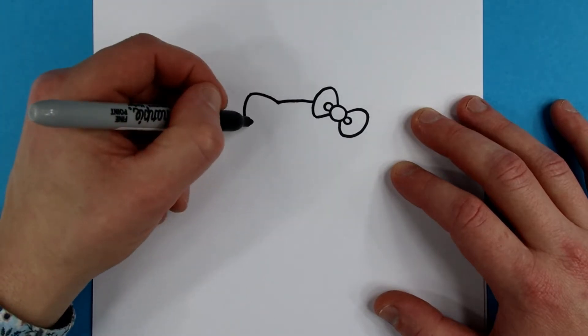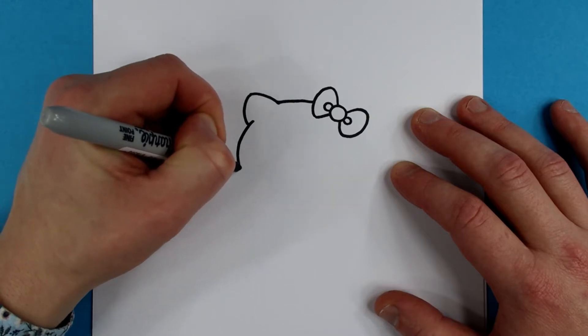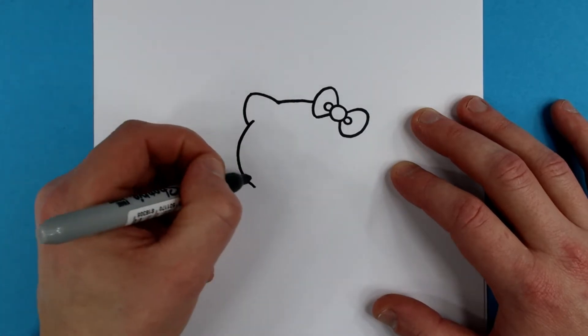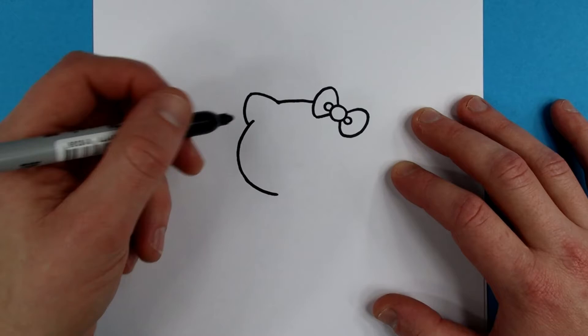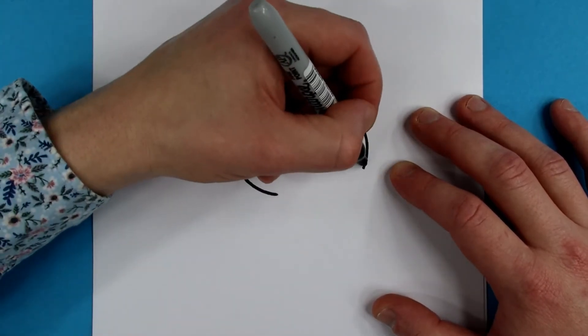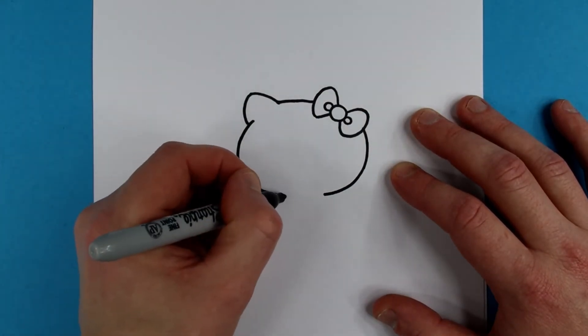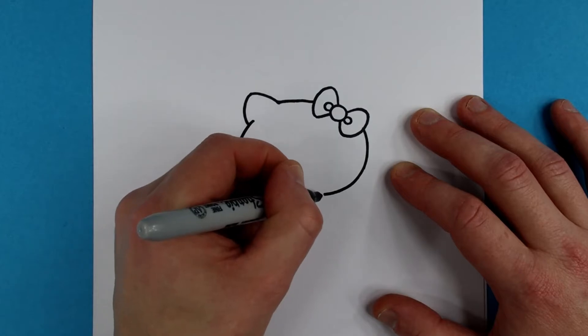Now I'm going to start a little bit sooner and start the oval for her head. Going down. Starting from the other side. Like this. And connecting the two.